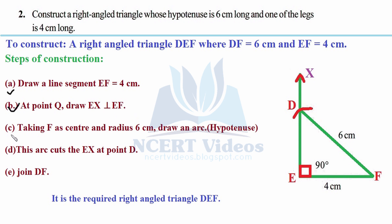Taking F as center and radius 6 centimeters, draw an arc. We take F as center to locate point D. We call it EX first because we don't yet know where D will be — you can use X or Z or any letter. Adjust your compasses on the ruler to 6 centimeters, and wherever the arc intersects line segment EX, that is the required point D. This completes the right-angled triangle DEF.